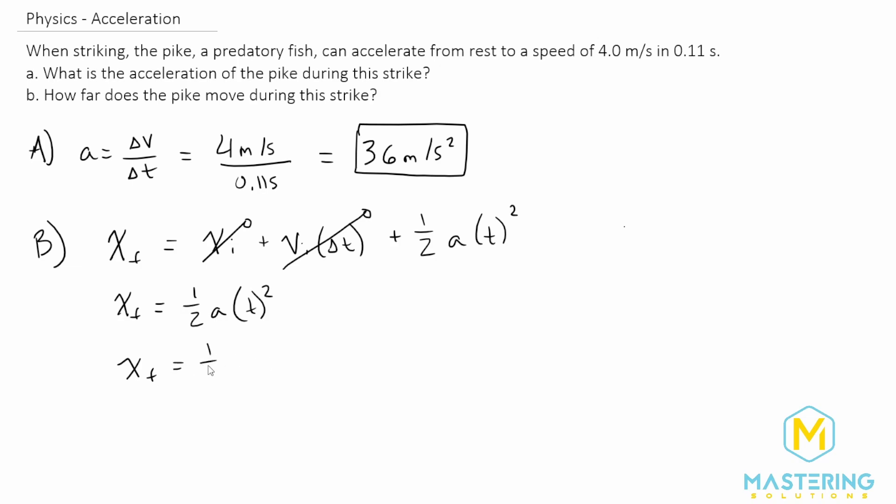So now when we plug in our value, we have 1 half times the acceleration, which we just figured out was 36 meters per second squared. And now we will multiply that by the time, which they say is 0.11 seconds squared.